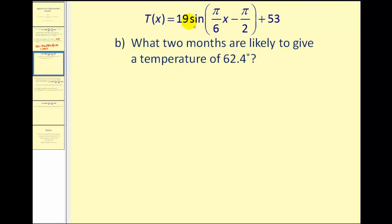So now they're giving us the temperature, or T(x), and they want us to find the possible values of x, or in which months the temperature will be 62.4 degrees. Let's set this up.